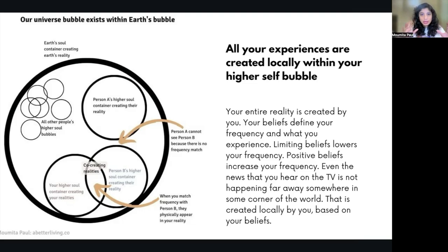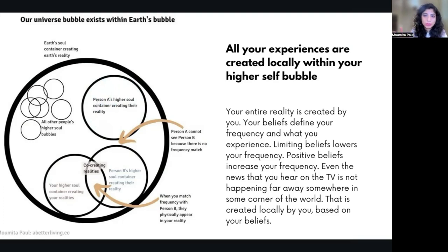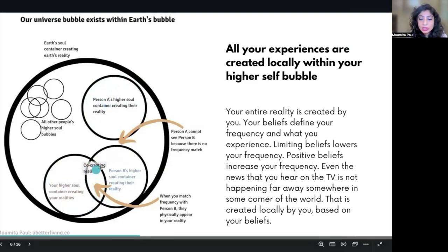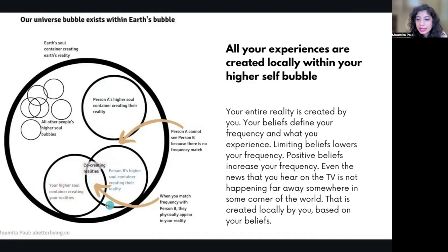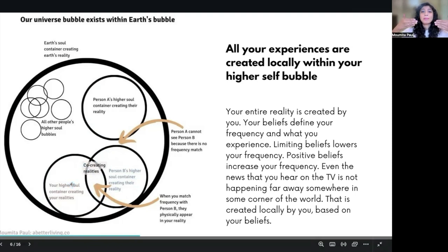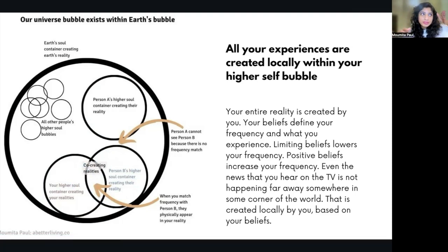All these factors play together to create your present reality. If you consider this circle as your higher self bubble, every person has their own higher self bubble — including animals, trees, and any living being. Whenever you come in contact with another human, what is happening is their higher self bubble and your higher self bubble are experiencing a match in frequency. You are not physically moving anywhere. All the higher self bubbles of all people on this planet exist right here, right now, but you don't experience them because there is no match in frequency. Every time there is a frequency match, they manifest in your reality.